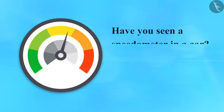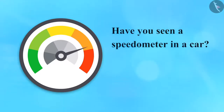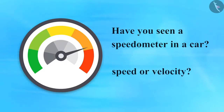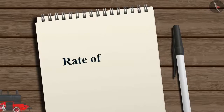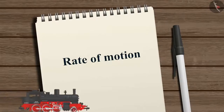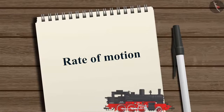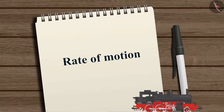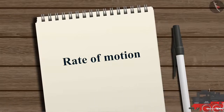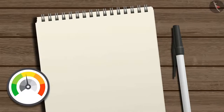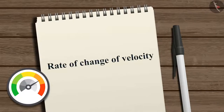Have you seen a speedometer in a car? What does it measure — is it speed or velocity? We learnt about the rate of motion, which is the rate of change of position of an object in a given time interval. Now, let's study the rate of change of velocity.